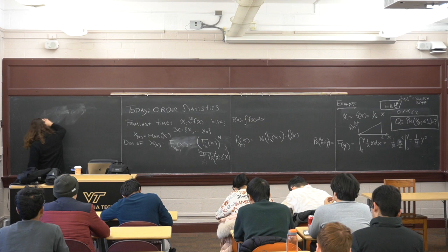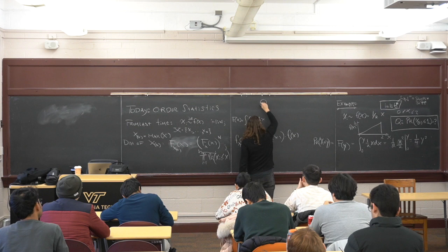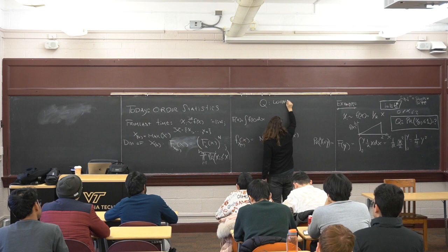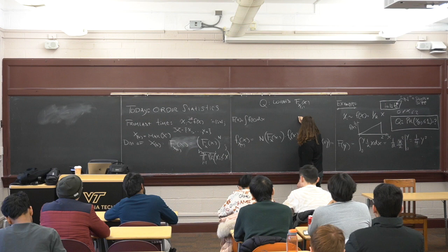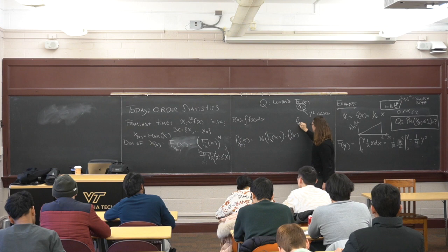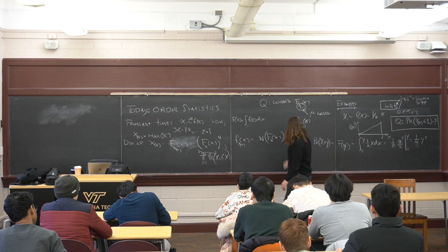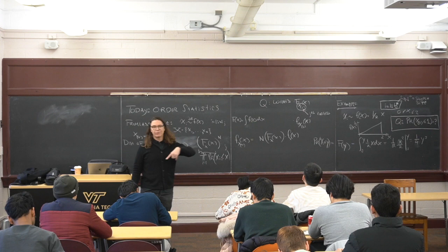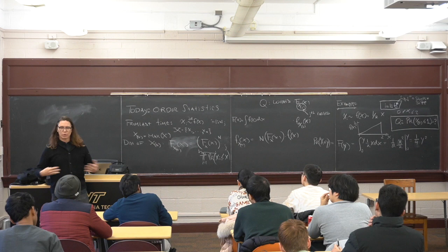In general, what we want to answer is: what's the probability distribution for the j-th order statistic — the j-th largest — and what's the accompanying density function for the j-th largest? Those are the two things we're building up to. When we come back on Friday, we'll talk about the joint distribution of two order statistics and the joint distribution of many order statistics.